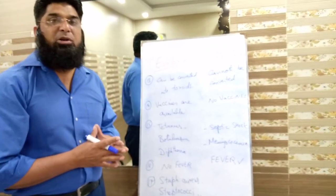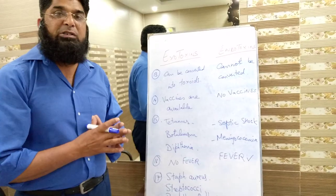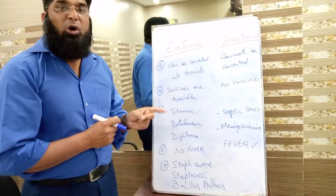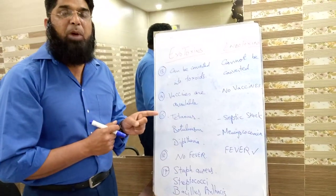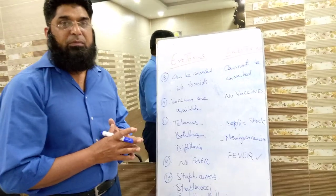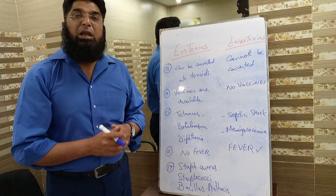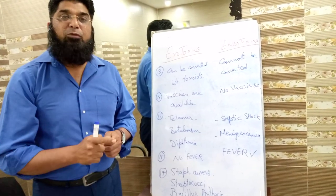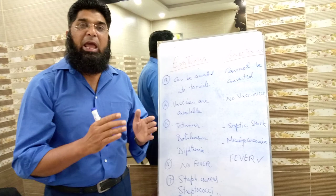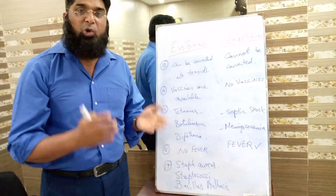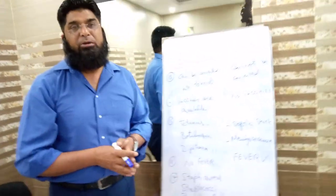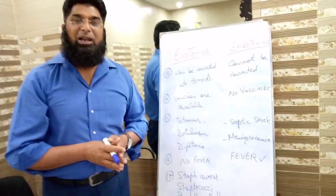To summarize: exotoxins are released or excreted by both gram-positive and gram-negative bacteria, whereas endotoxins are part of the cell wall of gram-negative bacteria only. When gram-negative bacteria die, their cell wall disintegrates and endotoxins are released into the environment. Thank you, students. Allah Hafiz.